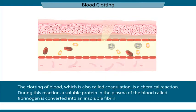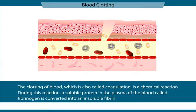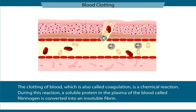The clotting of blood, which is also called coagulation, is a chemical reaction happening in the system. During this reaction, a soluble protein in the plasma of the blood called fibrinogen is converted into an insoluble fibrin.